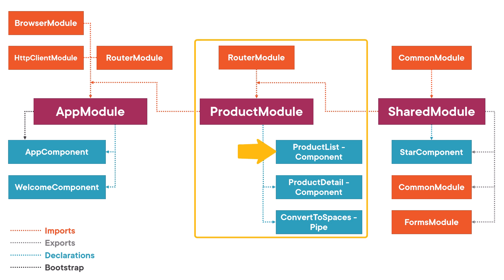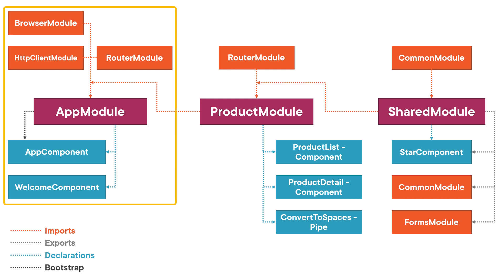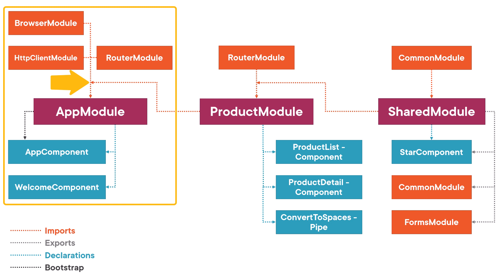Our product module declares our product components and our custom pipe. It imports the router module for product routing, and the shared module so the product templates can display stars, access ngIf and ngFor, and use two-way binding. Our app module declares our basic application components, including the app component and welcome component. It imports browser module, HTTP client module for sending HTTP requests, and router module for our main routing, and it imports our product module to pull our product features into the application.